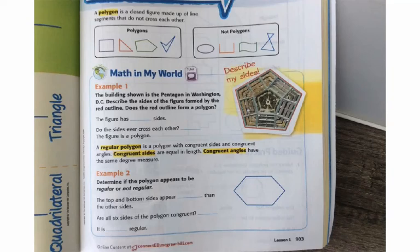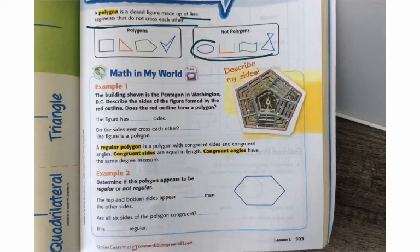Good morning. A polygon is a closed figure made up of line segments that do not cross each other. I want you guys to really focus on this. It's made up of line segments that do not cross each other. And another thing is that they need to be straight lines. So curvy lines do not make a polygon.